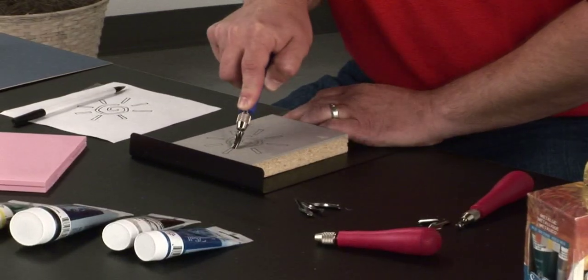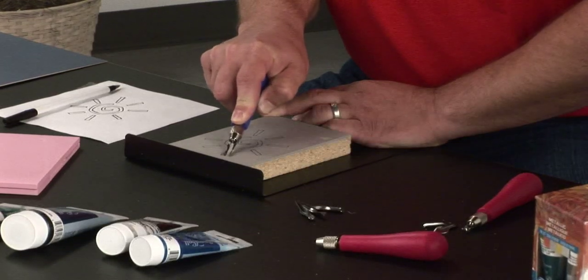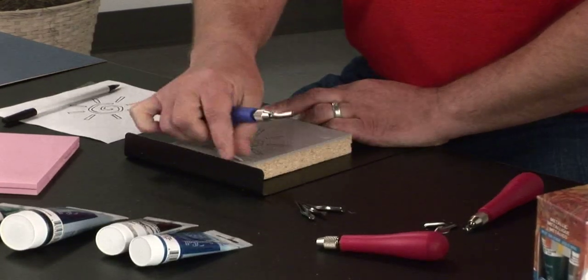With the traditional linoleum carver, you push into the block, and then try to glide smoothly along your cut edge, lifting the material out.